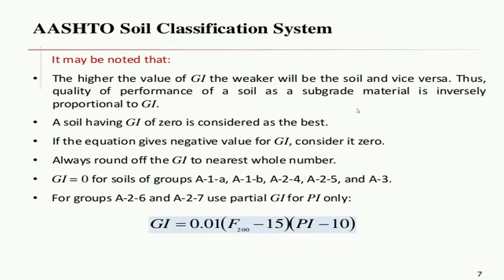According to the AASHTO soil classification system, the higher the value of GI, the weaker the soil, and vice versa. Thus, the quality of performance of the soil as a subgrade material is inversely proportional to GI. A soil having a GI of 0 is considered the best. If the equation gives a negative value of GI, consider it as 0. Always round up the GI to the nearest whole number. GI is 0 for soils of group A1, A1-B, A2-4, A2-5, and A3. For groups A2-6 and A2-7, use partial GI for the PI only.